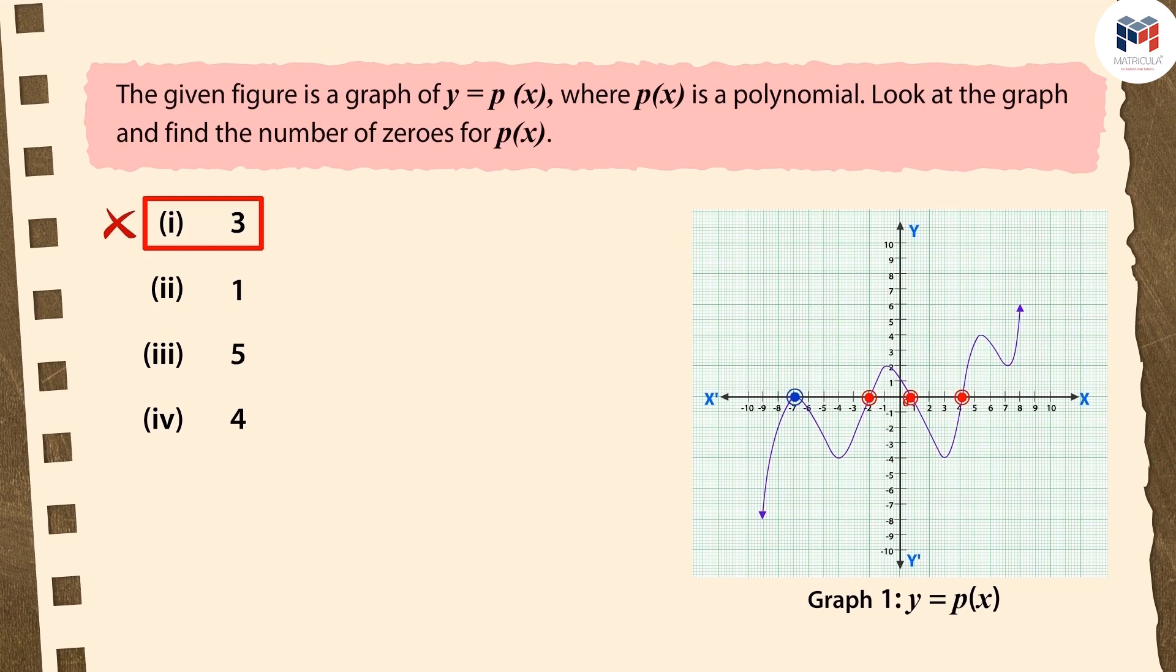Recall that we have studied three cases of the zeros of a quadratic polynomial. In one of the cases, the graph intersects the x-axis at only one point, that is, at a coincident point.